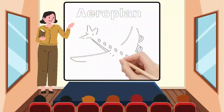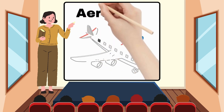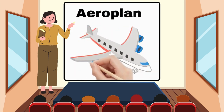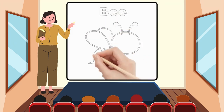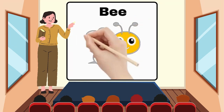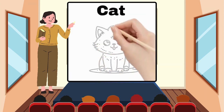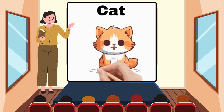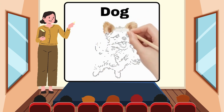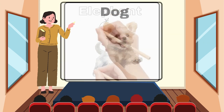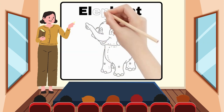A for Airplane. B for Bee. C for Cat. D for Dog. E for Elephant.